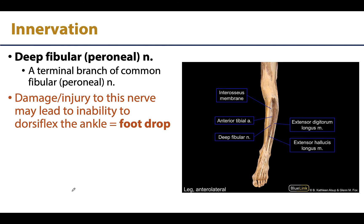The muscles of the anterior compartment are innervated by the deep fibular or deep peroneal nerve, which is one of the two terminal branches of the common fibular or peroneal nerve. Damage to the deep fibular nerve may lead to a complete inability to dorsiflex the ankle — the foot appears too long and the toes do not clear the ground during the swing phase of walking. This could be due to direct injury to the deep fibular nerve or to the common fibular nerve, which wraps around the neck of the fibula in a fairly subcutaneous position, leaving it vulnerable to direct trauma. An injury to the common fibular nerve would affect both the deep fibular and the superficial fibular nerves, which innervate the anterior and lateral compartments respectively.